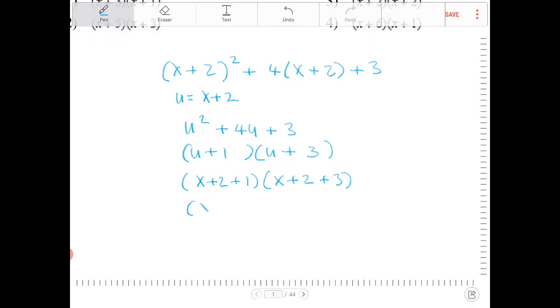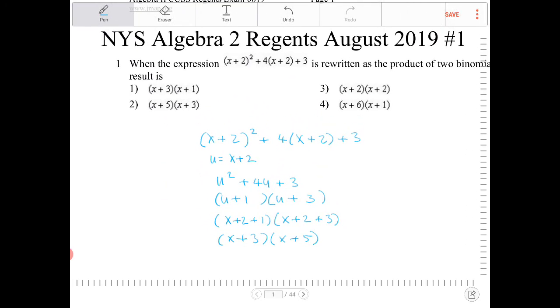This turns into (x+3)(x+5). So to answer the question, this original expression, when rewritten as a product of two binomials, is (x+3)(x+5), which is option 2.